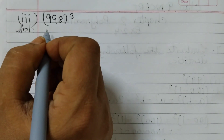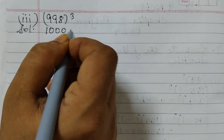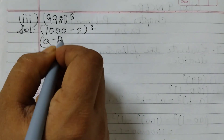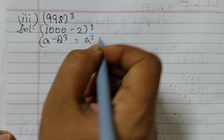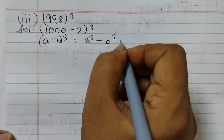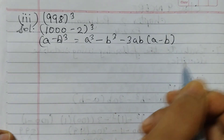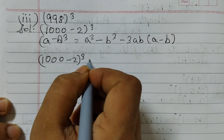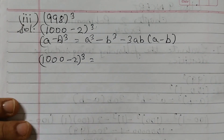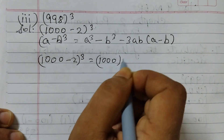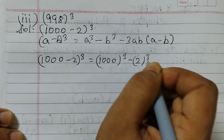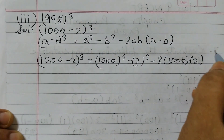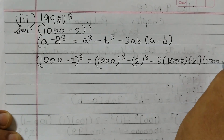The last one is 998 cubed. 998 can be written as (1000 - 2) cubed. So the identity will be (A - B)³ = A³ - B³ - 3AB(A - B), where A is 1000 and B is 2.